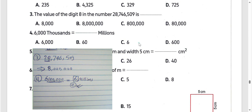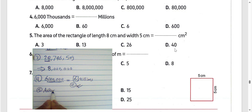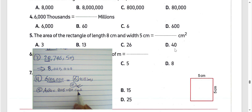Next, question number 5: the area of a rectangle equals length times width. We have 8 times 5 equals 40. So the area equals 8 times 5 equals 40 square centimeters. Choose letter D.